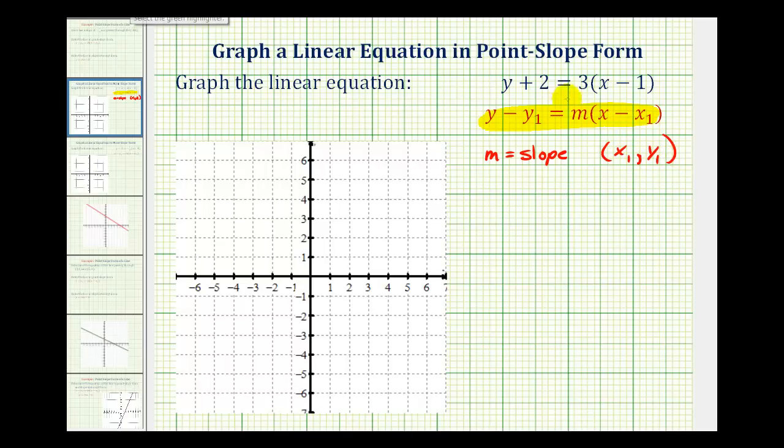So looking at our equation, we should recognize that the slope is going to be three, and for graphing purposes, we want to write this as three over one. Remember, this tells us the ratio of the change of y to the change of x.